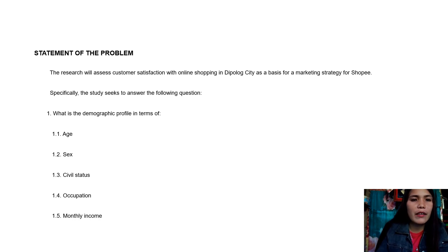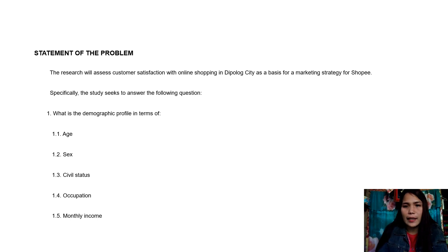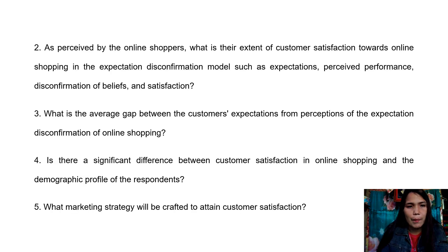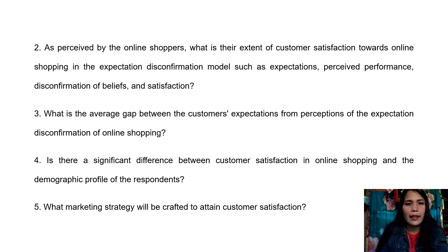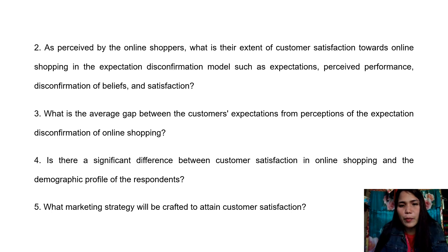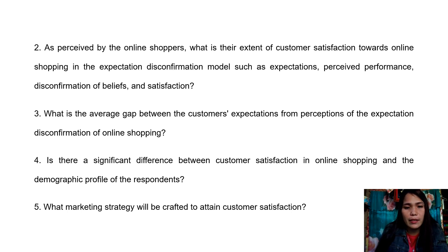The statement of the problem: this research will assess customer satisfaction with online shopping in Pollock City as a basis for a marketing strategy for Shopee. Specifically, the study seeks to answer: (1) What is the demographic profile in terms of age, sex, civil status, occupation, and monthly income? (2) What is the extent of customer satisfaction towards online shopping in the expectation-disconfirmation model — expectations, perceived performance, disconfirmation of beliefs, and satisfaction? (3) What is the average gap between customer expectations and perceptions? (4) Is there a significant difference between customer satisfaction and the demographic profile of respondents? (5) What marketing strategy will be crafted to attain customer satisfaction?